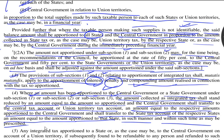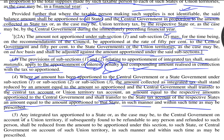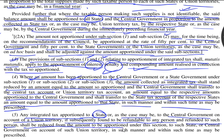This is about the transfer of integrated tax into the central tax account and state tax or union territory tax account. Let's see what subsection 5 prescribes. Subsection 5 prescribes that any integrated tax apportioned to a state, or to the central government on account of union territory tax, if subsequently found to be refundable to any person and refunded to such person, shall be reduced from the amount so to be apportioned under this section to such state or central government on account of such union territory, in such manner and within such time as may be prescribed. This is about refund to any person and adjustment against the state. Thank you for watching. This is all about apportionment of IGST and settlement of funds.